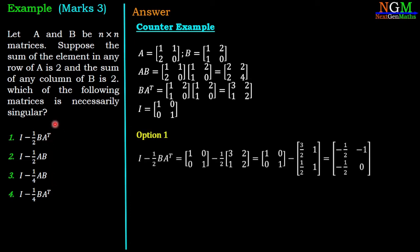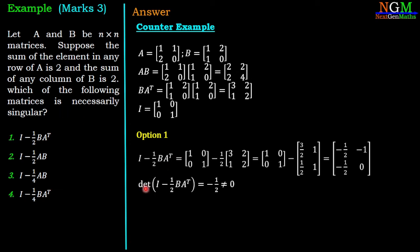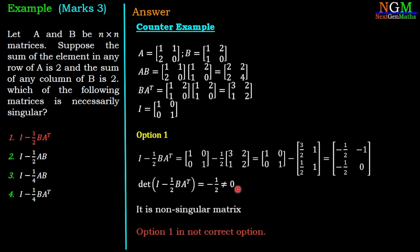Option 1: I minus 1/2 times B into A transpose. So [1 0; 0 1] minus 1/2 times [3 2; 1 2] gives [1 - 3/2, -1; -1/2, 1 - 1] = [-1/2, -1; -1/2, 0]. The determinant equals -1/2, which is non-zero. So it is a non-singular matrix, and option 1 is not the correct answer.